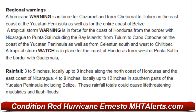There are also tropical storm warnings and watches which you can review yourself. Rainfall totals indicate 3 to 5 inches, locally up to 8 inches, along the north coast of Honduras and the east coast of Nicaragua, and 4 to 8 inches, locally up to 12 inches, in the southern Yucatan Peninsula including Belize — a very powerful storm with a lot of rain. Storm surge is expected at 2 to 4 feet above normal tidal levels near and north of the point of landfall, with large dangerous waves accompanying the surge — stay clear.